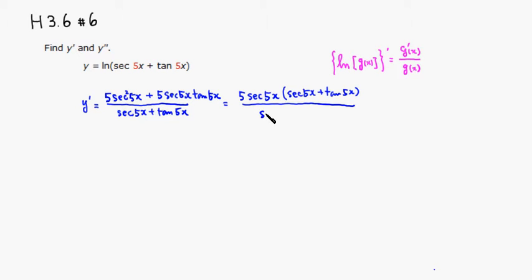Luckily, you have exactly the same factor on top and bottom, so this simplifies to 5 secant 5x.